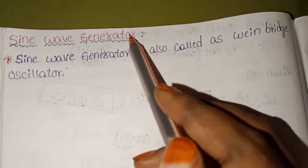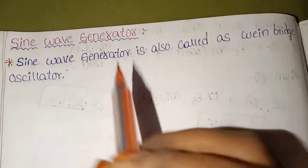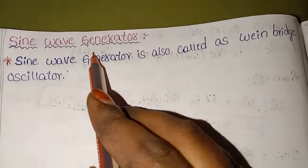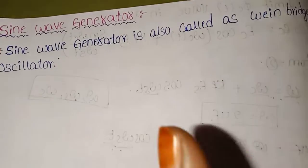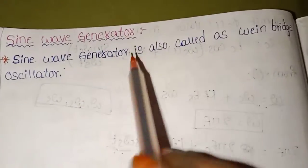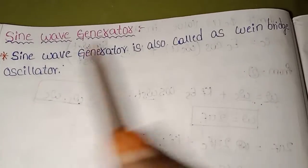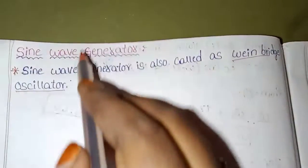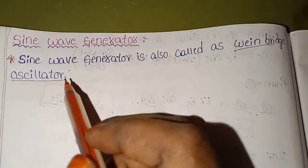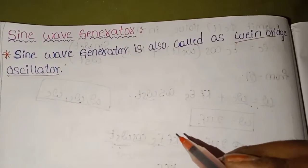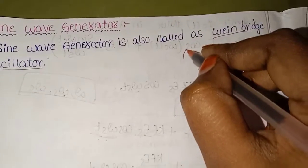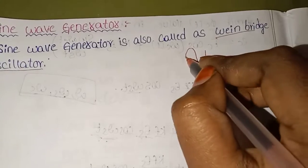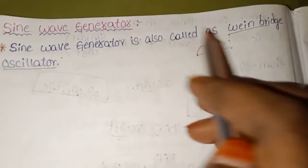First, the main name of the sine wave generator. What is a sine wave generator? A sine wave generator generates a sine waveform. It is a device that operates to produce a sine wave output.